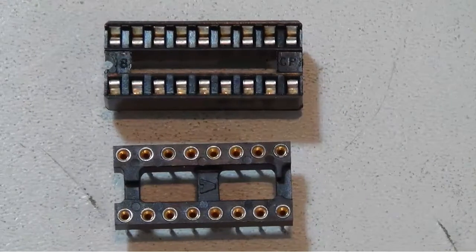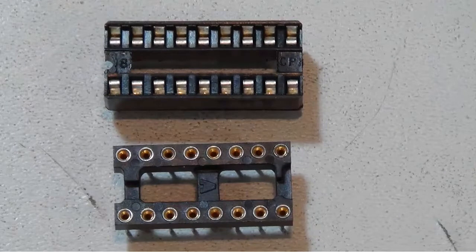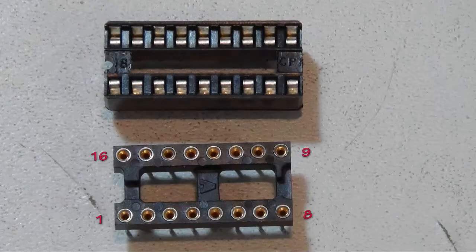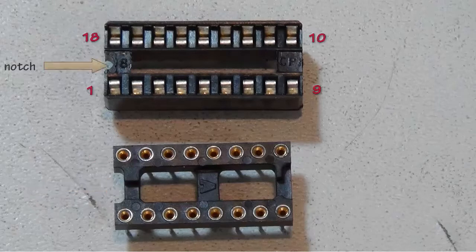Here are two more examples of IC sockets. One is a 16-pin IC socket with a larger notch on the left side and we have an 18-pin IC socket with a smaller notch on the left side.